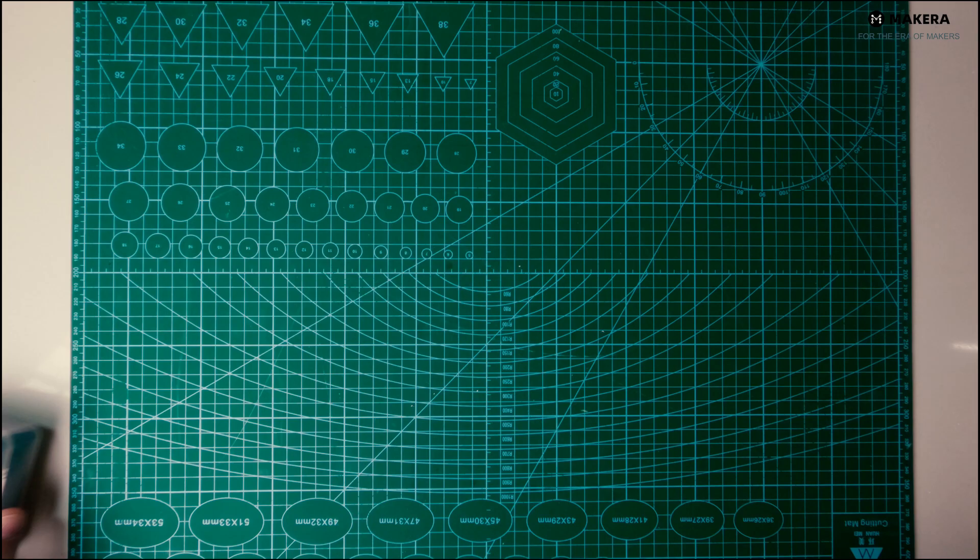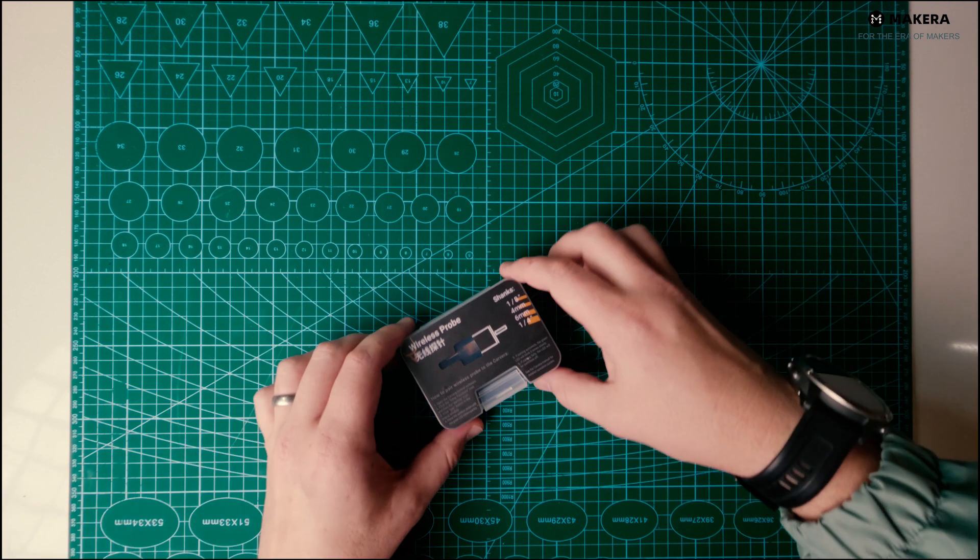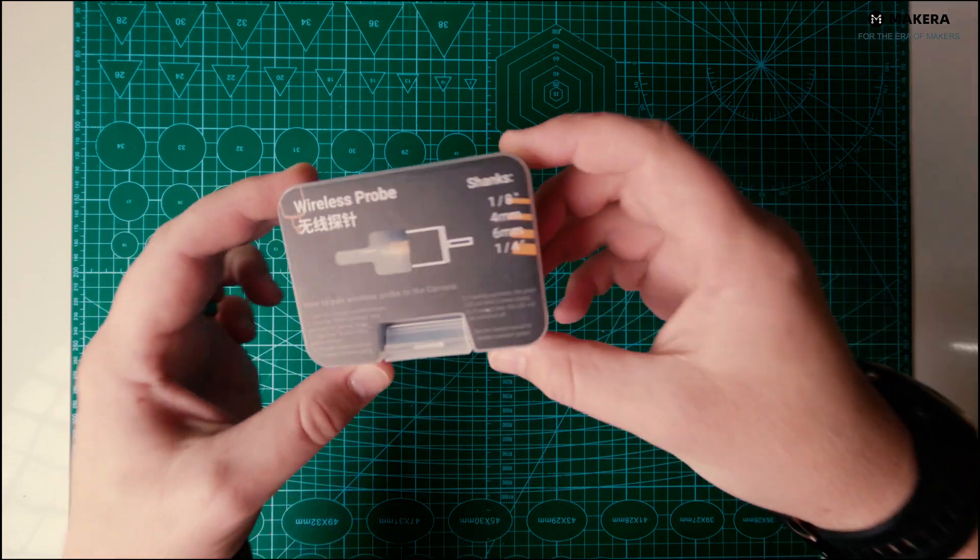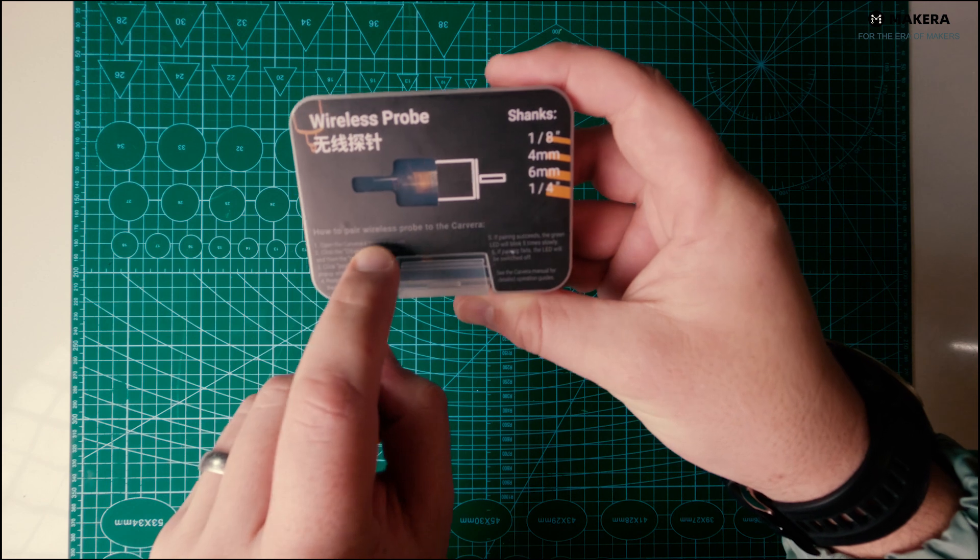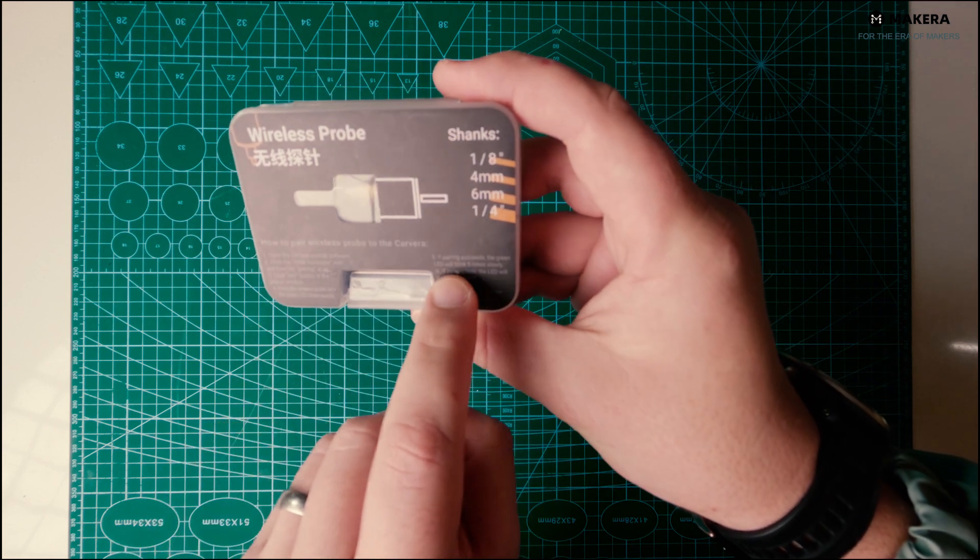First, let's have a look at the wireless probe. On the box you have instructions on how to use the probe and they include shanks. Standard inclusive is the probe and the three colored options.